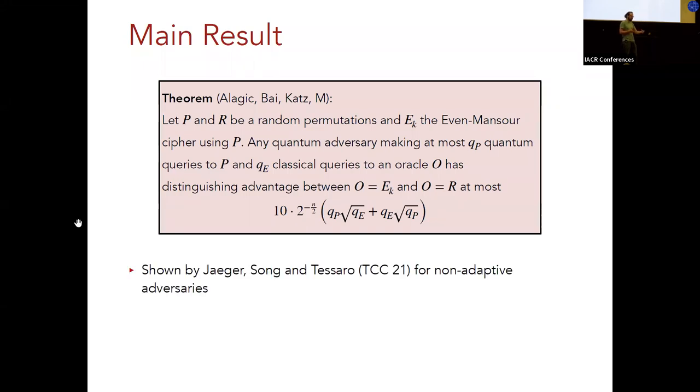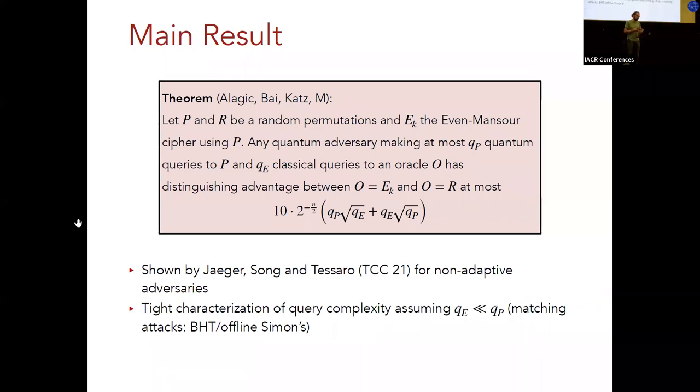This result was already shown by Jaeger, Song, and Tesoro last year for adversaries that, in advance of their execution, declare a list of queries that they will make to the cipher. And our result is for the adaptive setting, where the adversary can adaptively choose which inputs to query to the cipher. The bound looks a bit weird, in particular because of the sum, right? But it turns out that in a very natural setting where the number of online queries is much smaller than the number of offline queries, it is actually tight, in the sense that it tightly characterizes the query complexity of breaking Even-Mansour. And that's because it matches the BHT and offline Simon's algorithm.